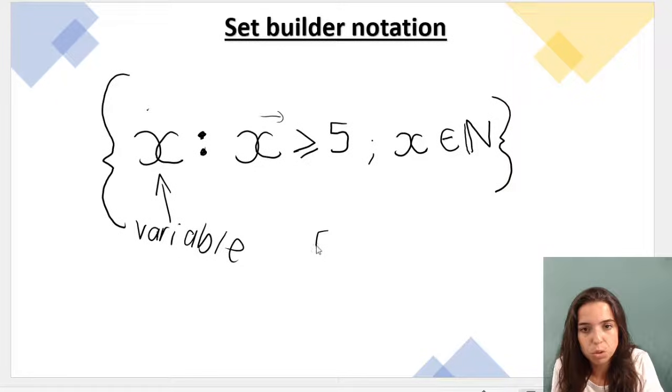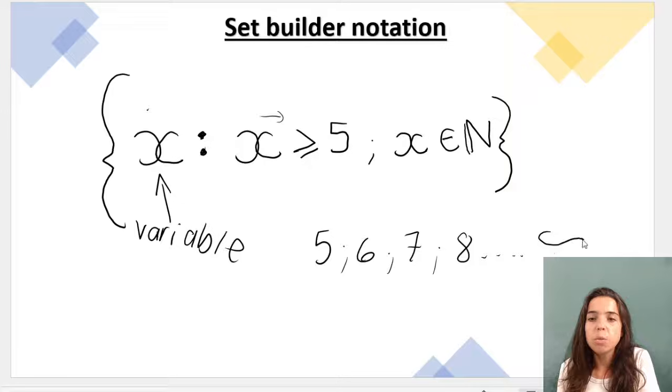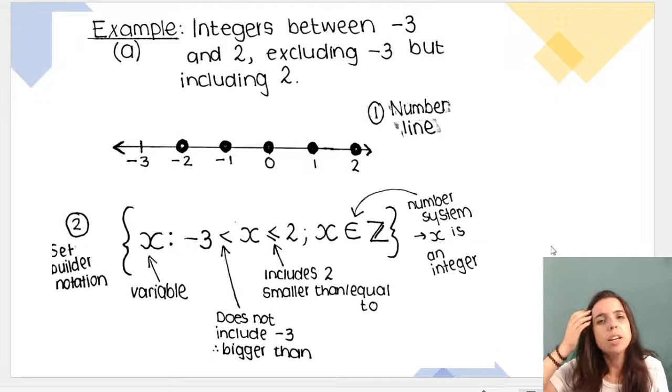So for example my set would start like 5, 6, 7, 8, and so on. I do not give an endpoint to my set, so we would say that it goes to infinity, positive infinity. That's set builder notation. Let's look at another example.